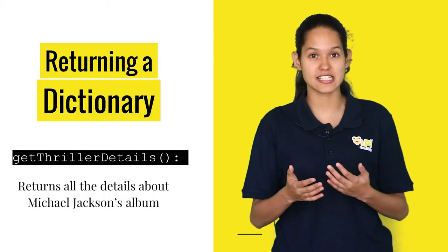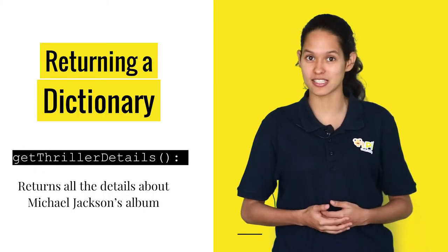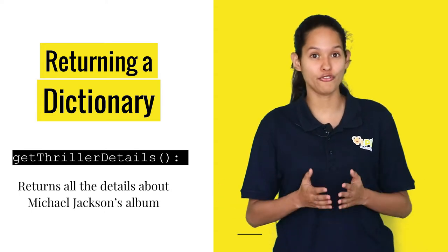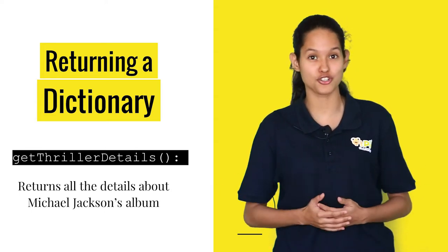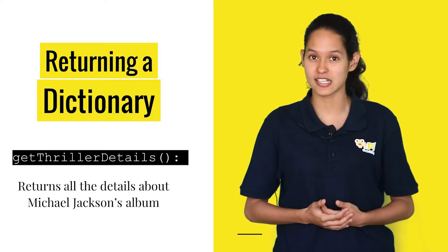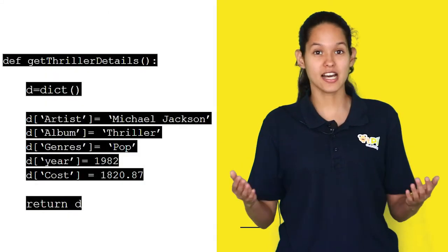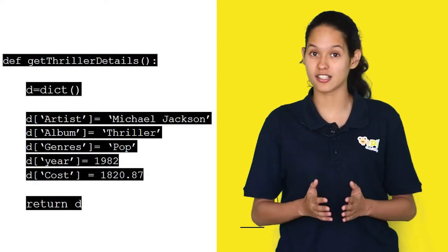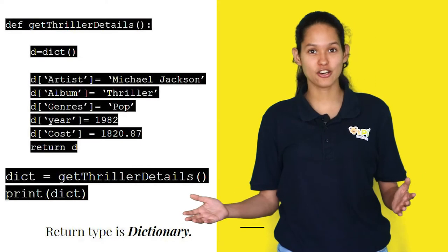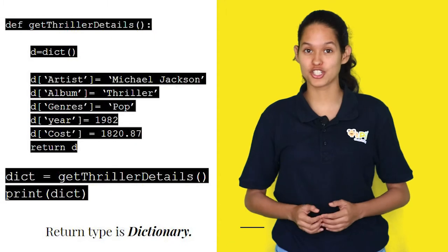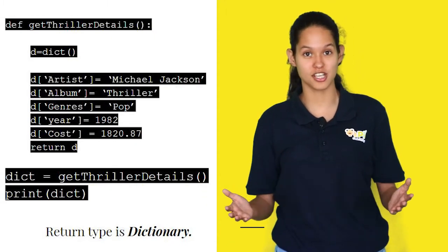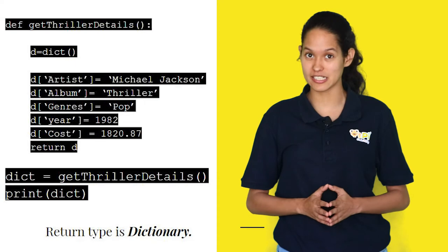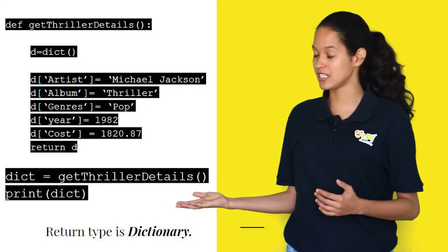If you wanted to share details about your favorite Michael Jackson album, you can just call the function getThrillerDetails, and this function will return all of the details about this album. Here the details are stored in a dictionary and the function returns a dictionary. Here's a look at the code. You can call the function getThrillerDetails and it returns a dictionary with all the album details. Finally, we print the details.